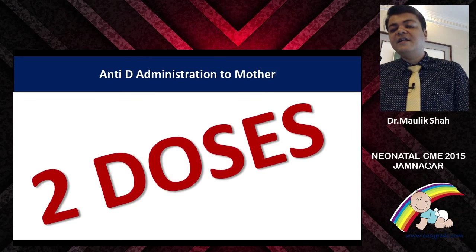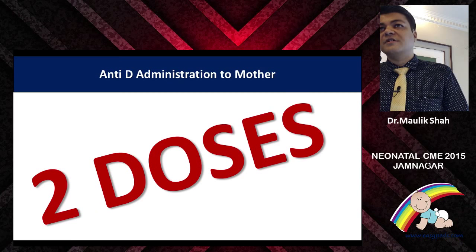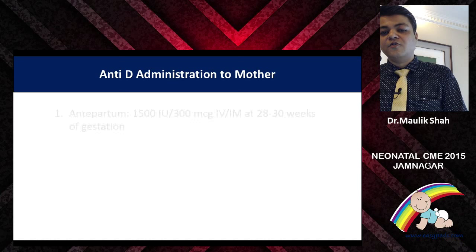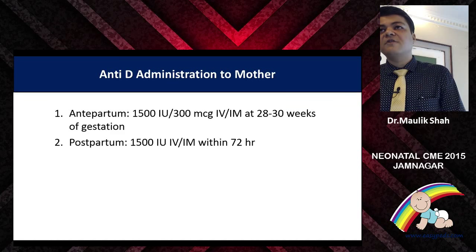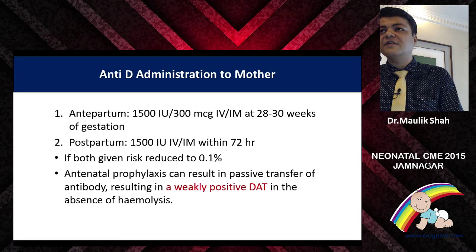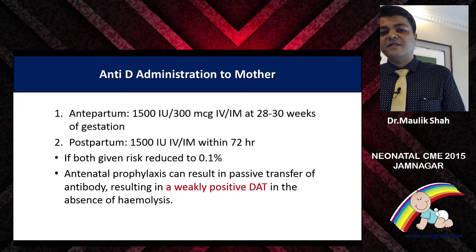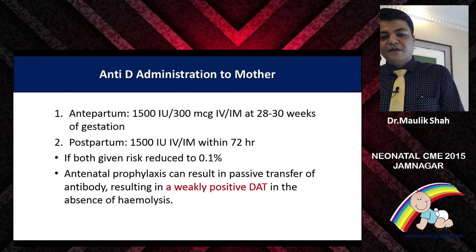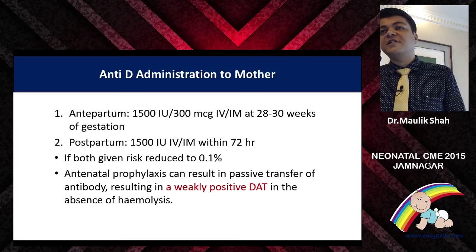We often tend to forget that anti-D (NTD) administration to the mother is also important. The newer AAP recommendations use 2 dosages instead of a single dose: the first dose antenatally at 28 to 30 weeks of gestation, and the second dose postpartum within 72 hours — the dose remains the same for both. If both are given, this reduces the risk of sensitization to 0.1% only. Note that giving anti-D to the mother generates a weakly positive DCT — that should not be taken as positive DCT or failure of anti-D.